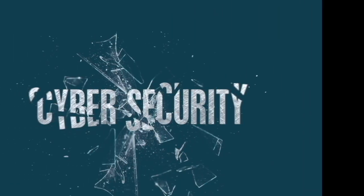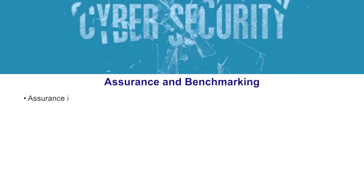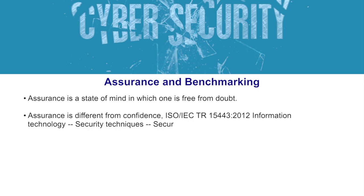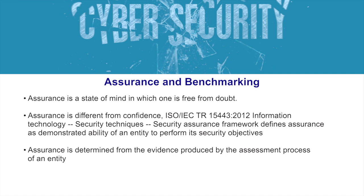As we have already discussed, let us go through the definition of assurance and benchmarking. Assurance is a state of mind in which one is free from doubt, and this is different from confidence. It is defined in the ISO standard, in a security assurance framework, as a demonstrated ability of an entity to perform its security objectives. It is demonstrated, meaning it is supported by evidence. So assurance is determined from the evidence produced by the assessment process of an entity. We must have some assessment method to generate that evidence, which gives us assurance on the cyber security posture of an entity.